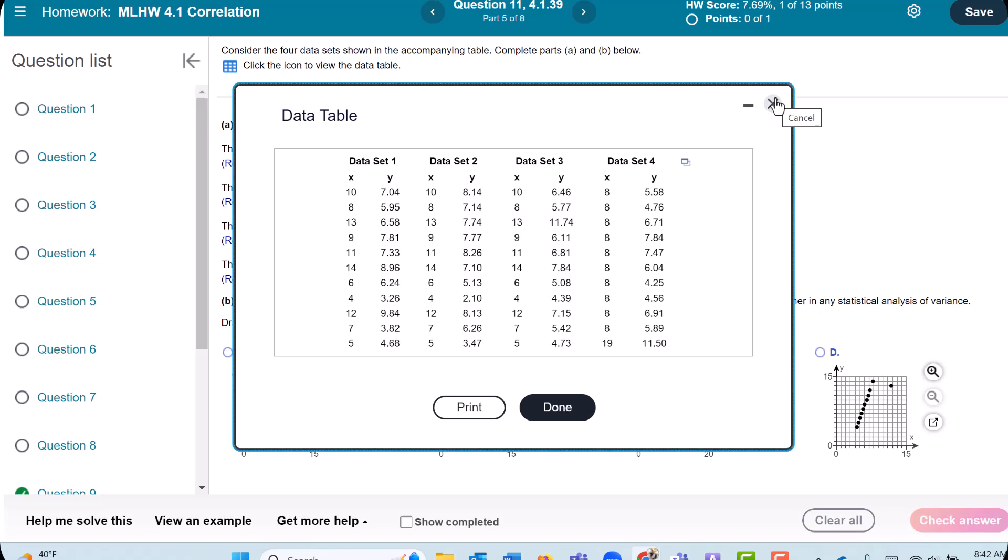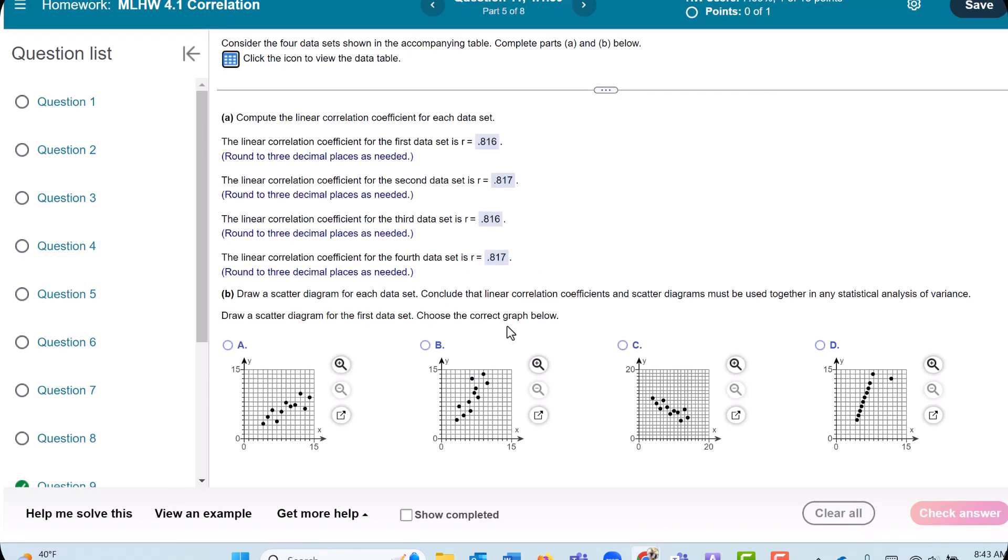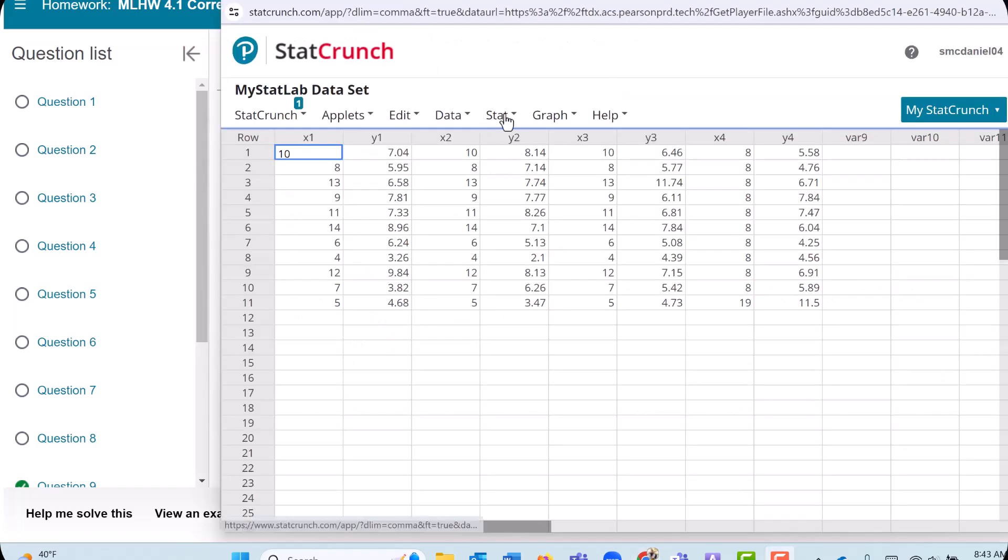Let's take a look at a visual of these. So that's what they're going to ask us to do, is to find a scatter plot for each of those four. So this is the first data set. Let's go ahead and take a look at it. And again, two different ways to do this.